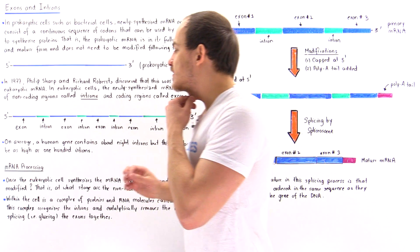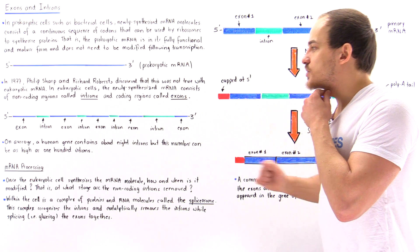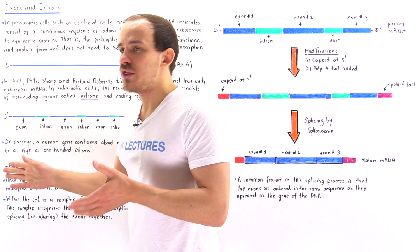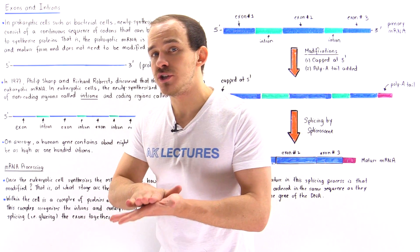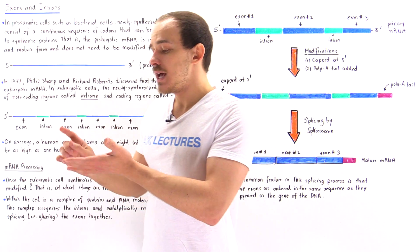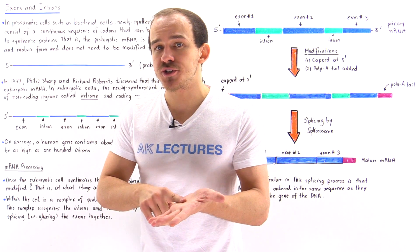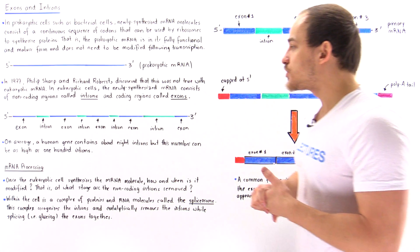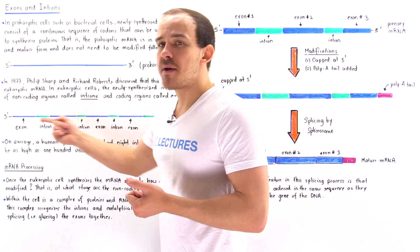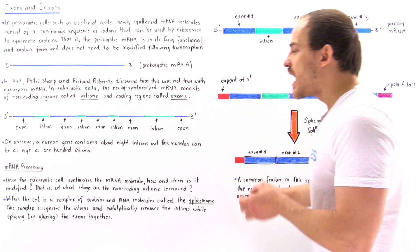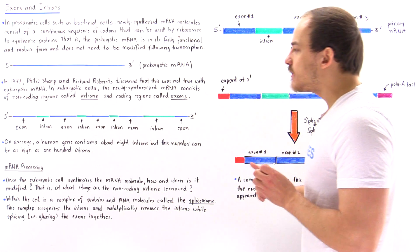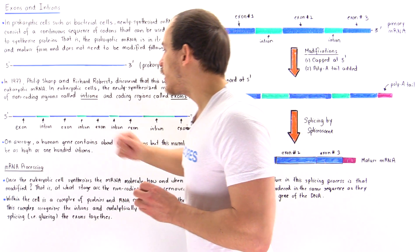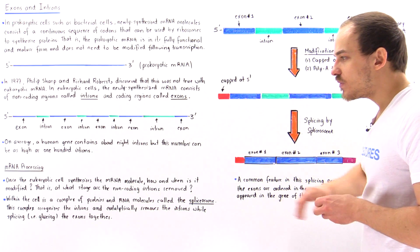once the eukaryotic cell actually synthesizes this pre-mRNA molecule. So, this mRNA molecule that is not in its fully functional and modified form is commonly known as the precursor mRNA, the pre-mRNA, or the primary mRNA. And so, once we form the primary mRNA molecule, how exactly do we modify this molecule? And at what stage do we actually take out these introns?